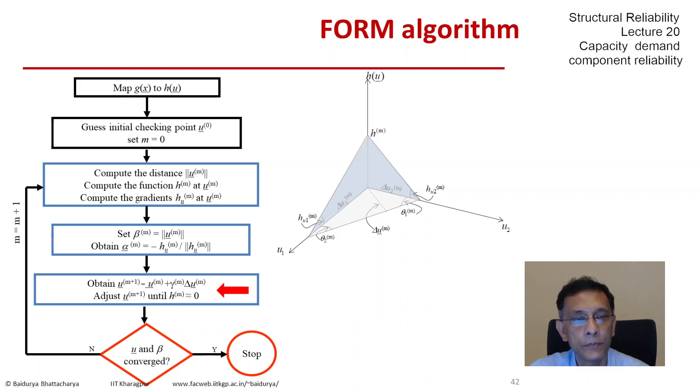If our new point could be given in terms of the old point plus a fraction or a multiple of the incremental vector delta u, there would be ways of choosing that factor gamma, which could vary from iteration to iteration. Then the u that I get, the m plus one iteration, I would like to adjust it until I'm back at h equals zero, so I'm back at the limit state line itself.